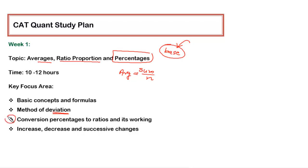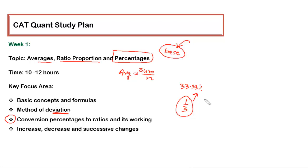You also have to focus primarily on the conversion of percentage to ratio and its working — this is very vital. Since we want to avoid heavy calculation, converting to ratios is very helpful. For example, instead of calculating 33.33% of something, it is better to use one-third, since one-third as a ratio is equivalent to 33.33% in terms of percentage. You should remember key percentages and their corresponding ratios.